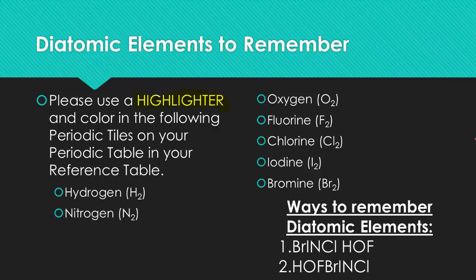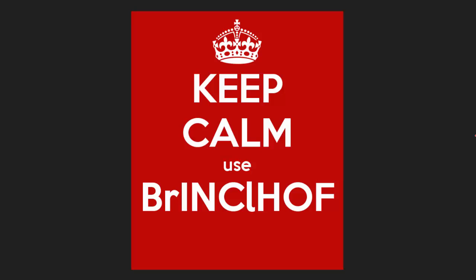Take out your reference tables and find the periodic table — it's towards the back. Grab a highlighter or colored pencil and shade in the following elements: hydrogen in the top left, and nitrogen, oxygen, fluorine, chlorine, iodine, and bromine, which are found on the far right-hand side. You can also write down the mnemonic 'Brinkelhoff' or 'Hoffbrinkel' on your reference table — they're the same thing. They stand for the seven diatomic elements: Bromine, Iodine, Nitrogen, Chlorine, Hydrogen, Oxygen, and Fluorine. If you ever forget the diatomics, just use Brinkelhoff.